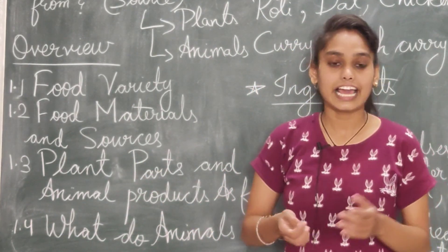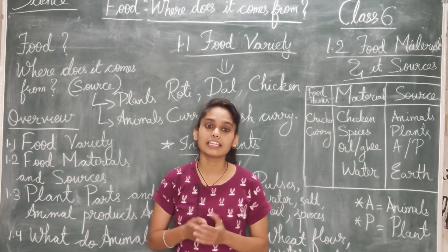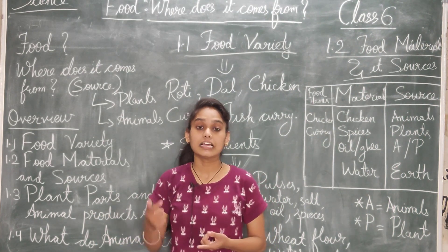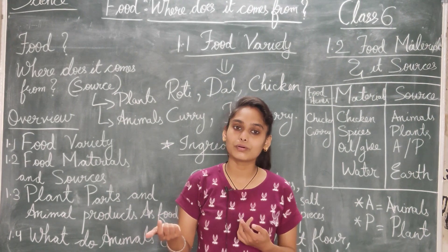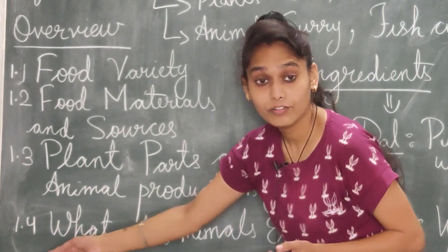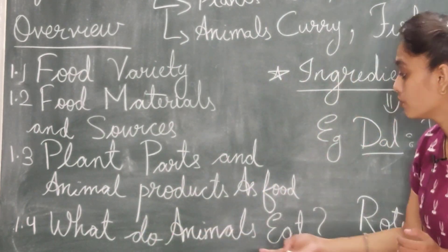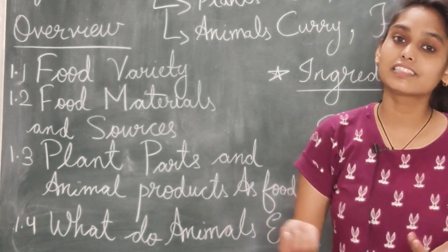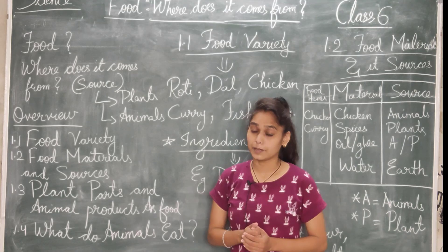1.3 में plant के different parts के बारे में पढ़ेंगे और animals के products के बारे में। जैसे cow हमें milk देती है, और milk के अलग-अलग products होते हैं जैसे घी, पनीर, और बहुत सारी चीज़ें। 1.4 में what do animals eat — animals क्या खाते हैं, animals कितने types के होते हैं, वो हम cover करेंगे।